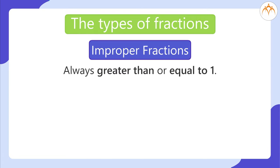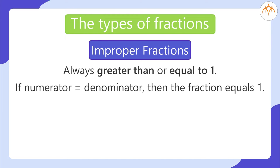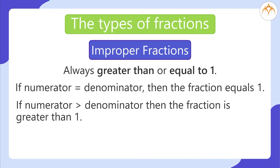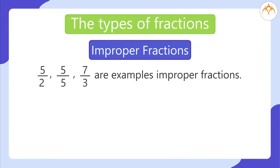Improper fractions are always greater than or equal to 1. If the numerator equals the denominator, the fraction equals 1. If the numerator is greater than the denominator, the fraction is greater than 1. Examples: 5 divided by 5 equals 1; 5 divided by 2 and 7 divided by 3 are improper fractions.